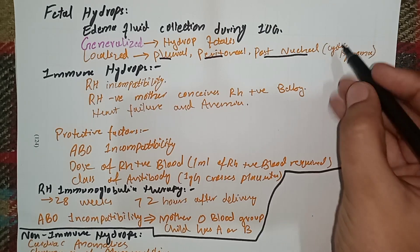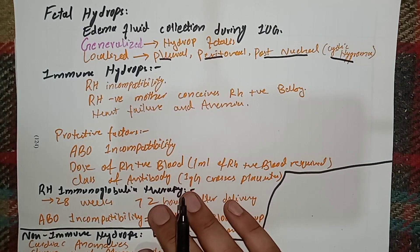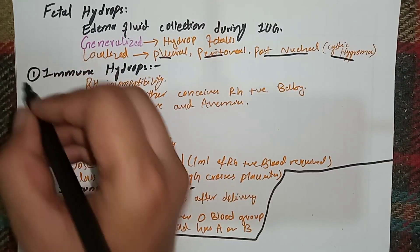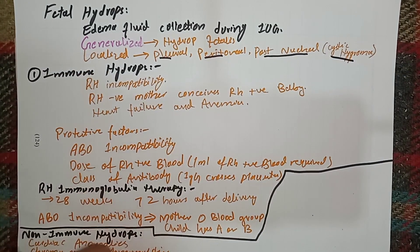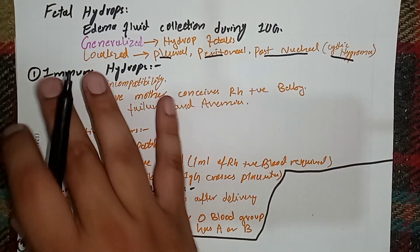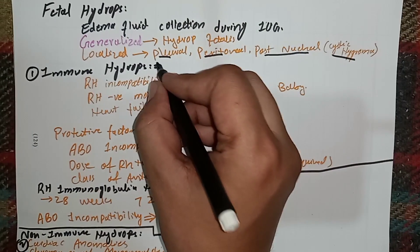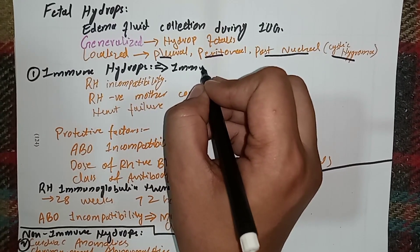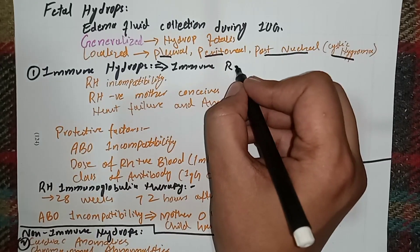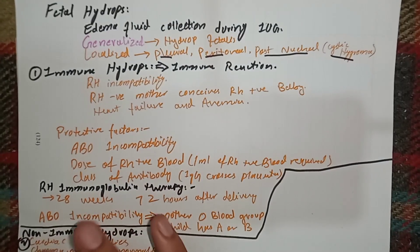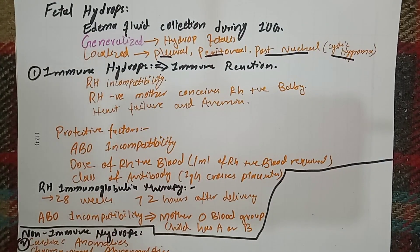There are two common variants of fetal hydrops: immune hydrops and non-immune hydrops. Immune hydrops is basically a result of some immune reaction, and this immune reaction mostly arises due to blood group incompatibility. Among blood group incompatibilities, the most common is RH incompatibility.